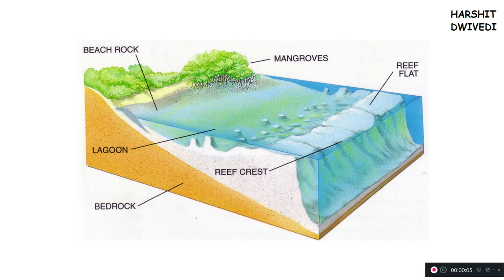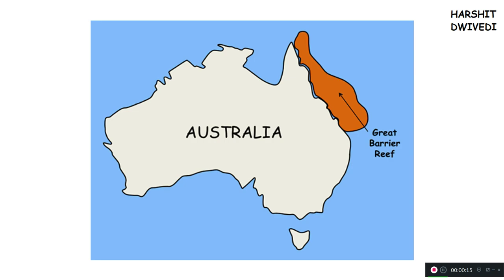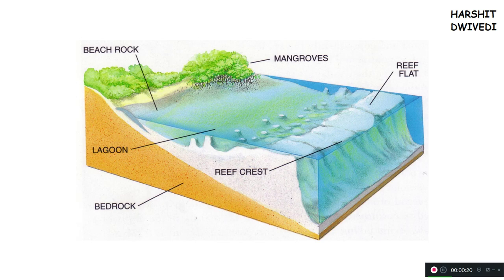Hey guys, my name is Arshi Devedi and I welcome you back to my video. In this video, in a very short amount of time, I am going to tell you how many types of coral reefs there are. There are three types of coral reefs: first is the fringing shore reef, second is the barrier reef, and third is the atoll reef. These three types of reefs I will be discussing in this video.